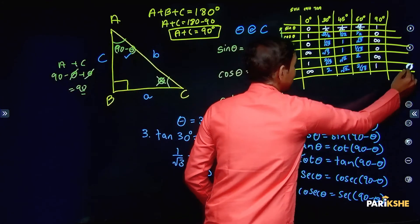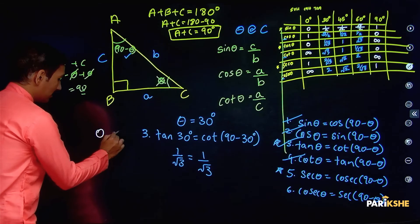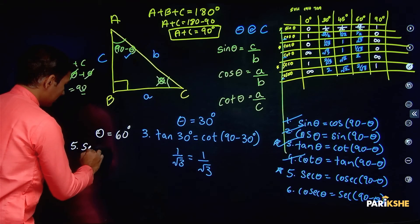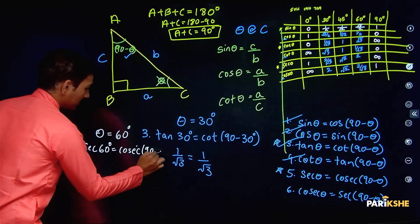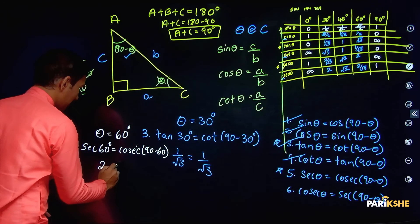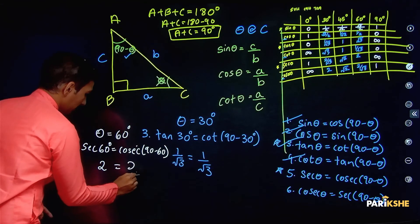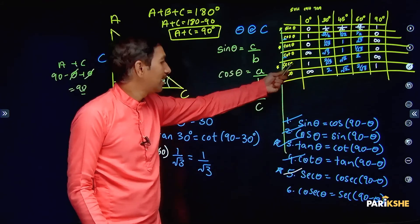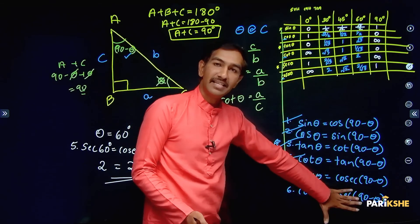Let us verify another result: secant theta equals cosecant(90 minus theta). Take theta equals 60 degrees. So secant 60 equals cosecant(90 minus 60). Secant 60 equals 2. And 90 minus 60 is 30, so cosecant 30 is also 2. Which means this result is also verified as correct. You can similarly take any value of theta from the table and verify any of these results.